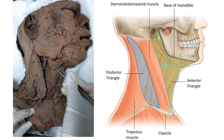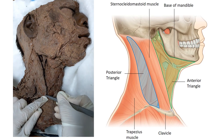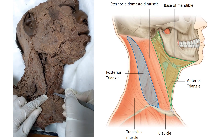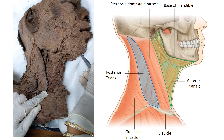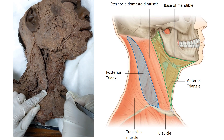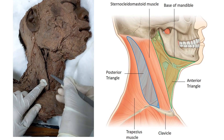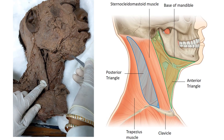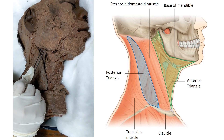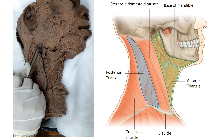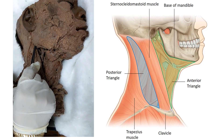The anterior triangle of the neck occupies the side of the neck in front of the sternocleidomastoid muscle. The boundaries of the anterior triangle: anteriorly, it is formed by the anterior median line, which extends from the symphysis menti to the suprasternal notch. Behind, it is formed by the anterior border of the sternocleidomastoid muscle. The base of the triangle is formed by the base of the mandible, with a line extending to the mastoid process.